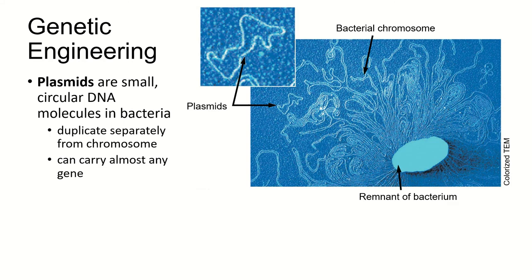Let's talk about one of the oldest techniques for genetic engineering, which actually uses bacterial DNA. Remember that bacteria have one chromosome — it's one circle, but it's really long. A lot of bacteria have another little bit of DNA called a plasmid. It's just a tiny little circle of DNA that might contain a few genes, much smaller than the bacterial chromosome. This is going to be duplicated whenever the cell duplicates, and whatever genes are on this plasmid can be expressed.